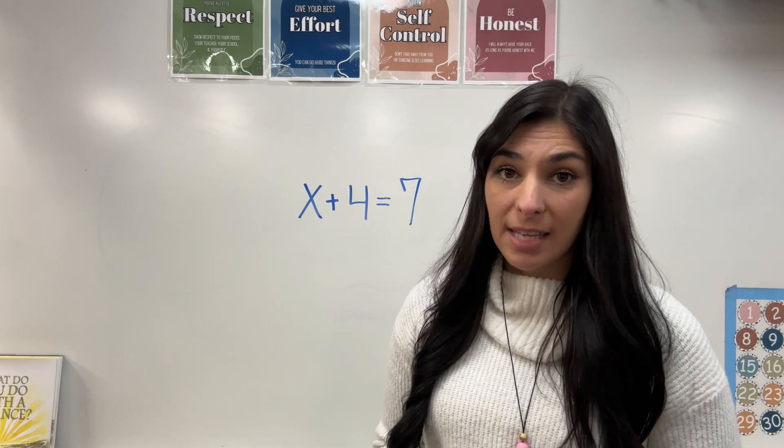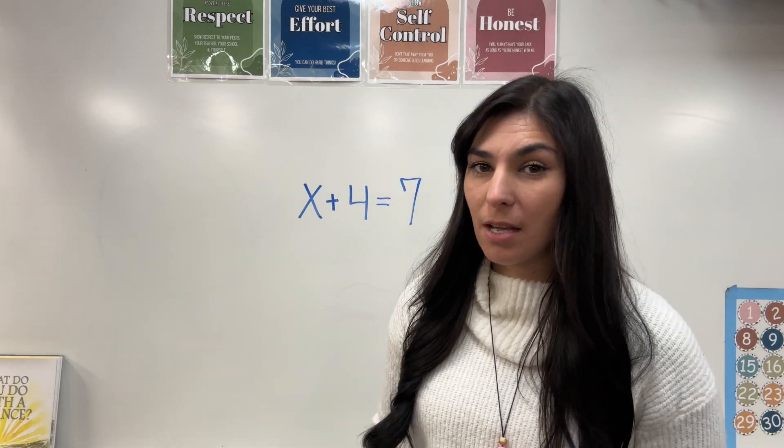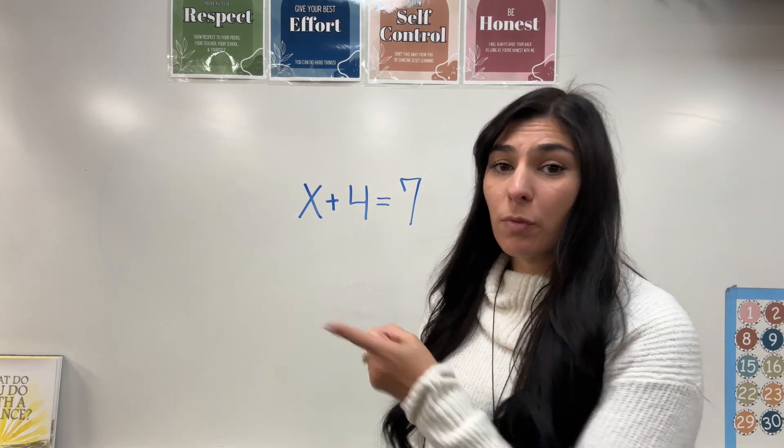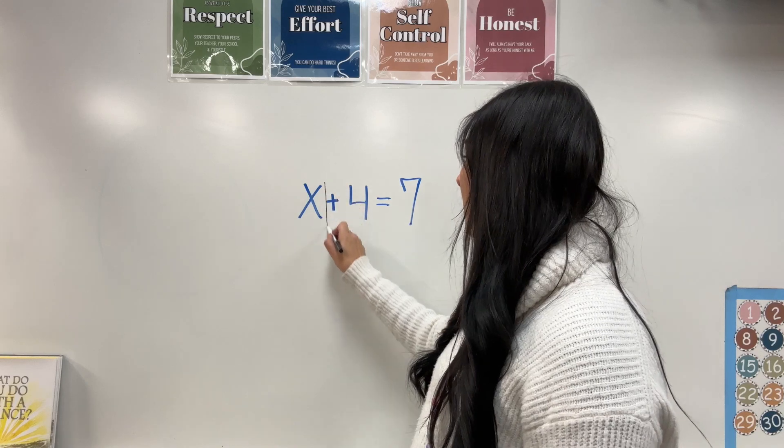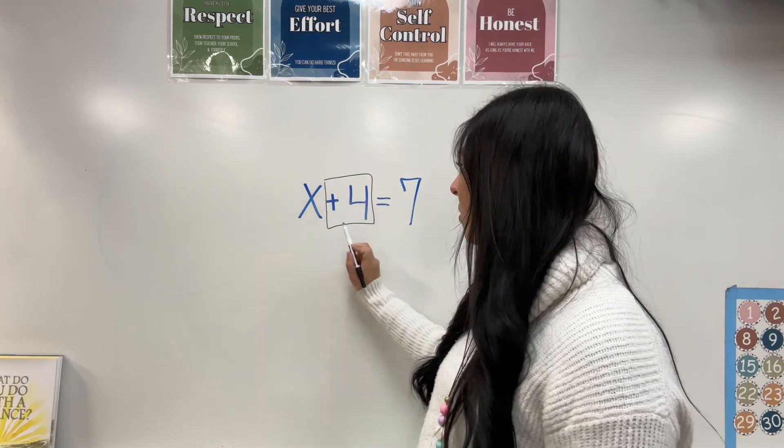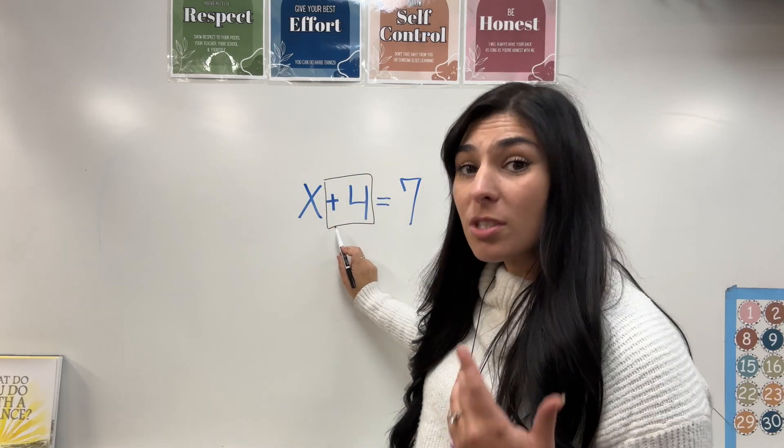Now let's dive into our first equation. First equation is x plus four equals seven. Now the goal is to get x all by itself. So step one, I'm going to look at the original operation. We're doing addition. So now I need to think of what the inverse operation of addition is, which is subtraction.